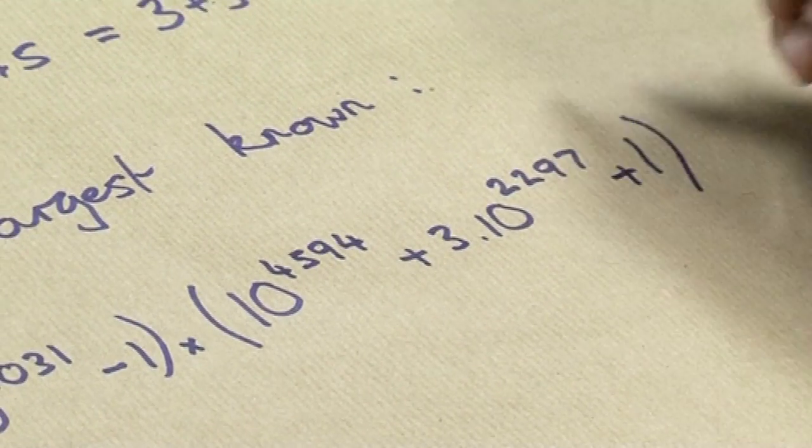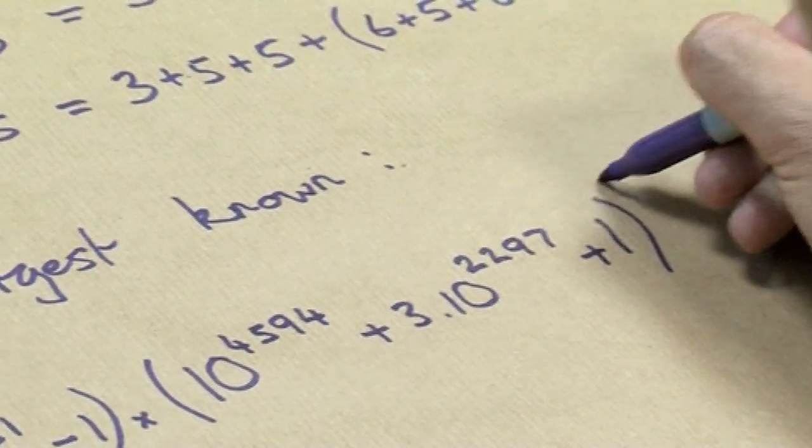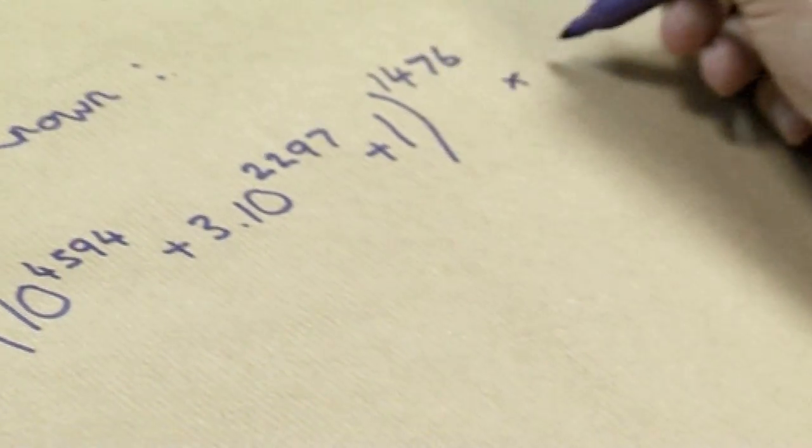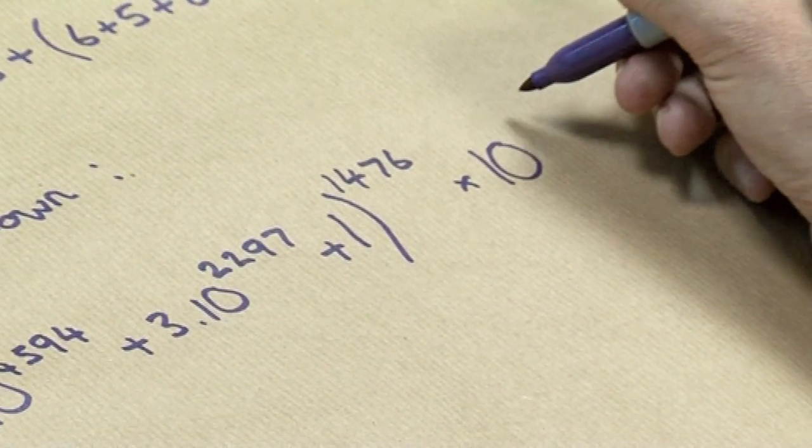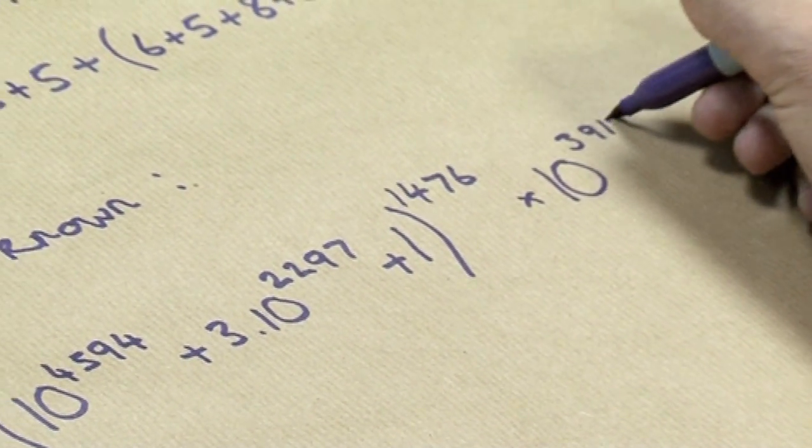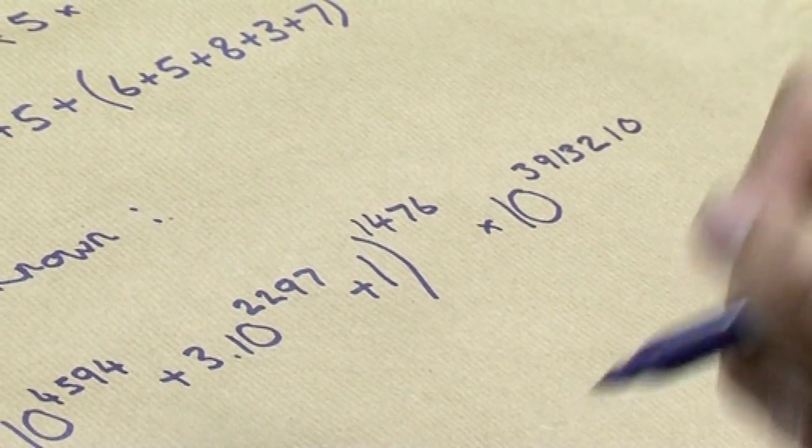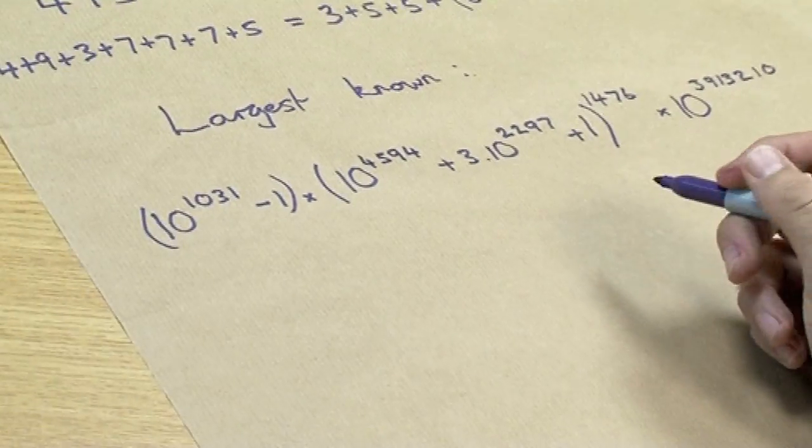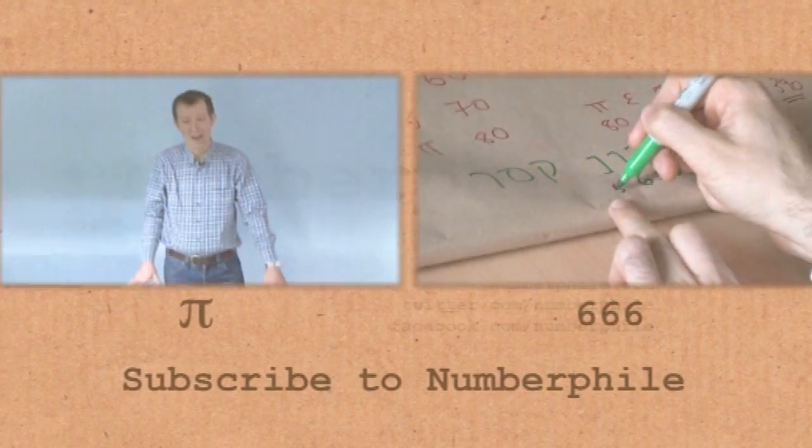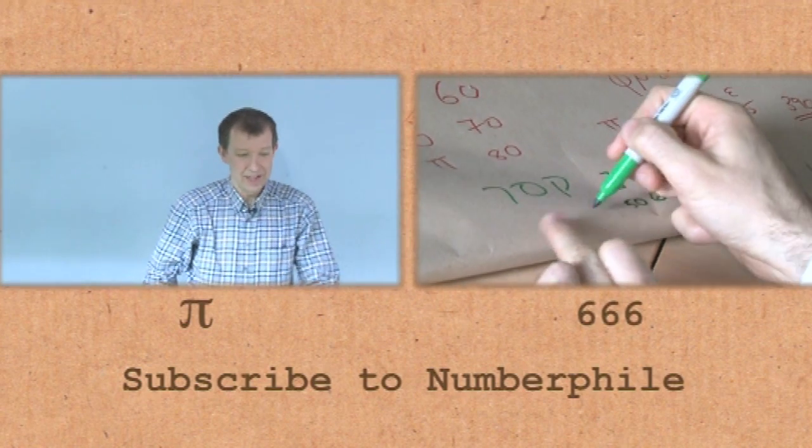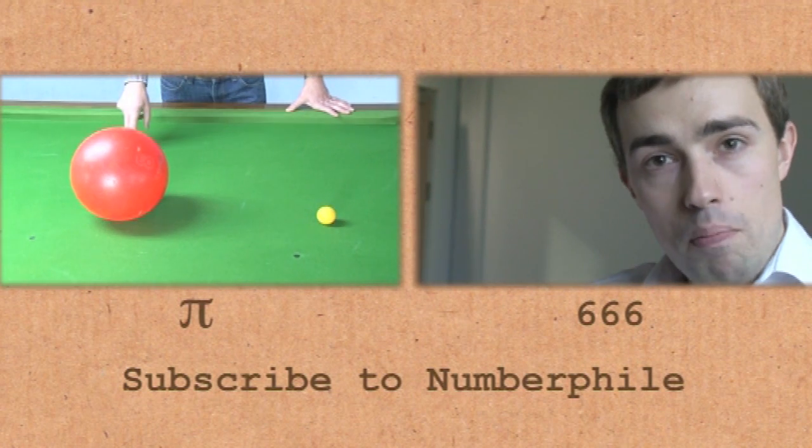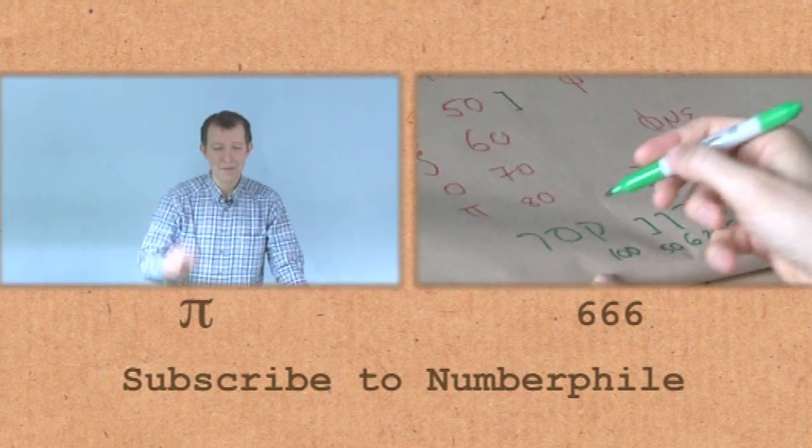And all of that bracket is raised to the power 1476. And that's not the end of it. And that then all gets multiplied by 10 to the power 3,913,210. And this is the largest known Smith number. In fact, it's given as, in terms of the little maths, it's given as 16 times 100 to the power n. Well, I'm going to let this number n vary. OK.